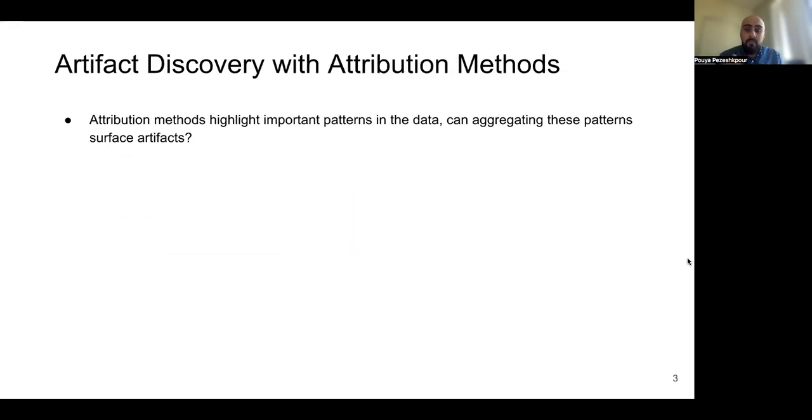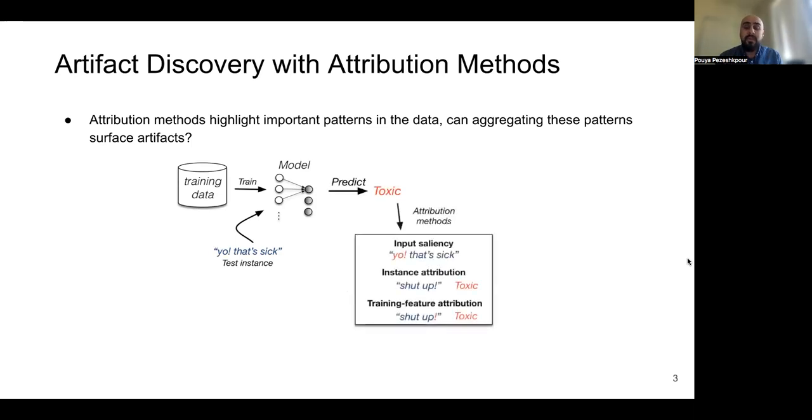The solution that we find for this task was using different attribution methods. We know attribution methods highlight important patterns in the data. The question is, can we somehow aggregate these patterns to surface artifacts? So, getting model prediction for a specific target sample, we first explain this prediction using different attribution methods. And then, providing this explanation to a user, our goal is to be able to detect artifacts.